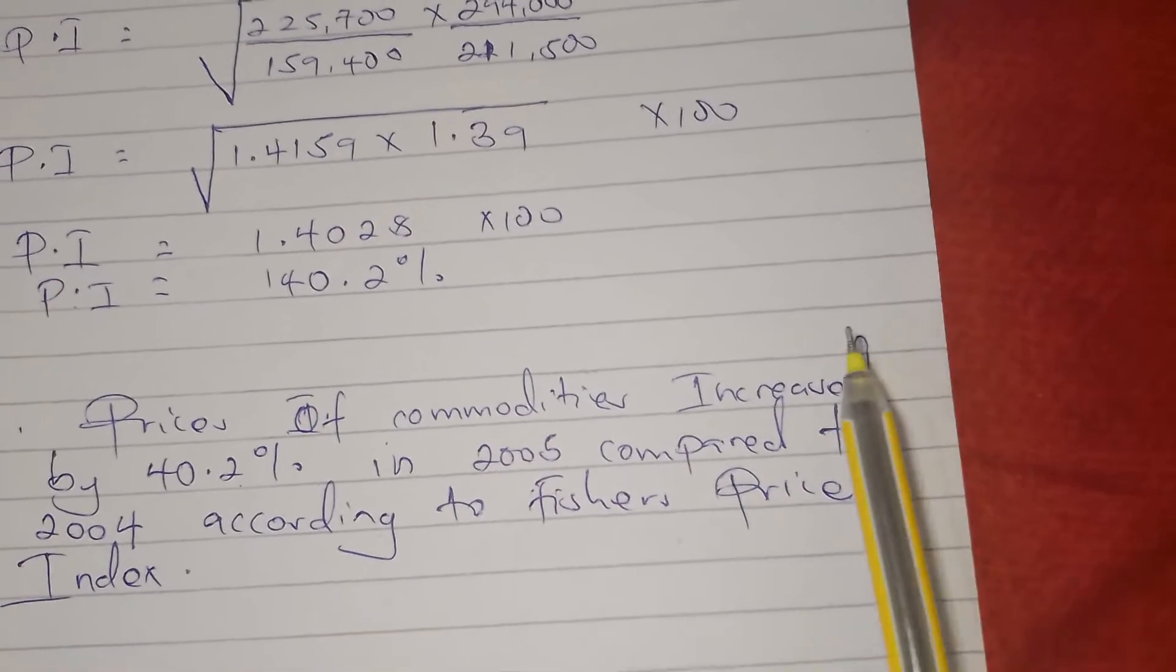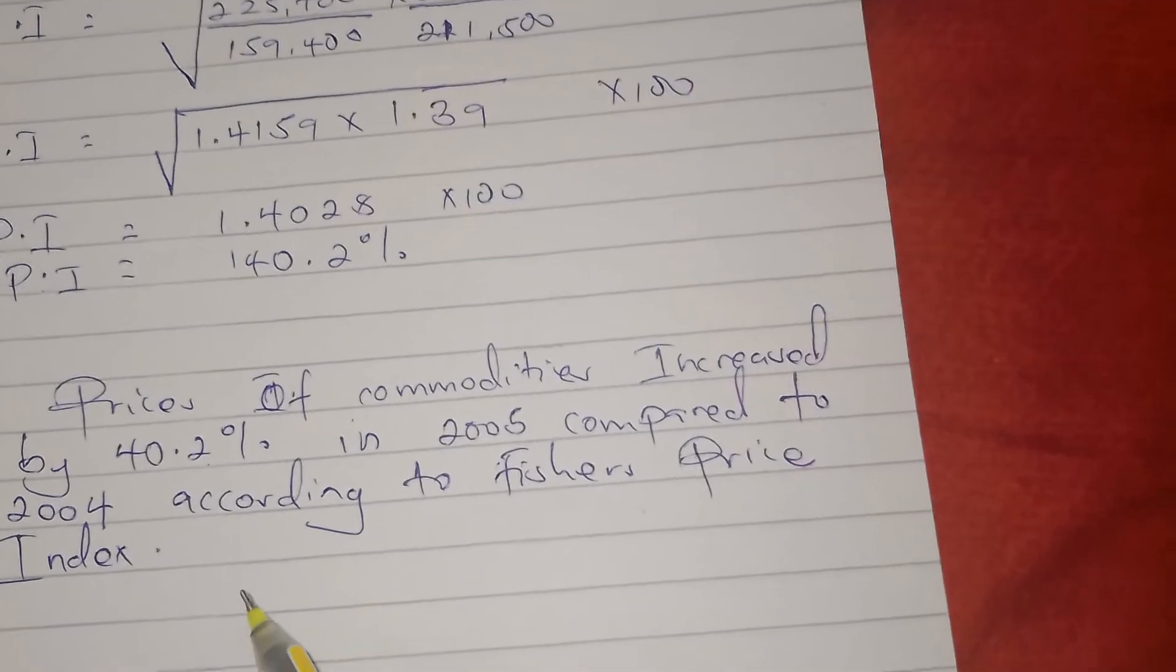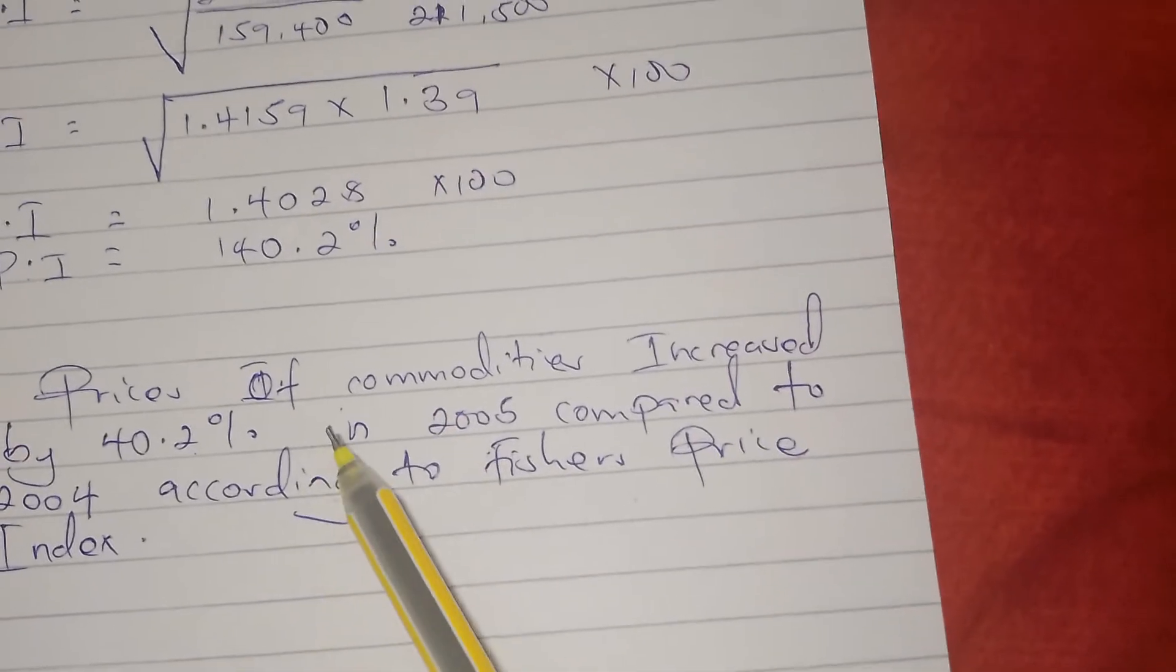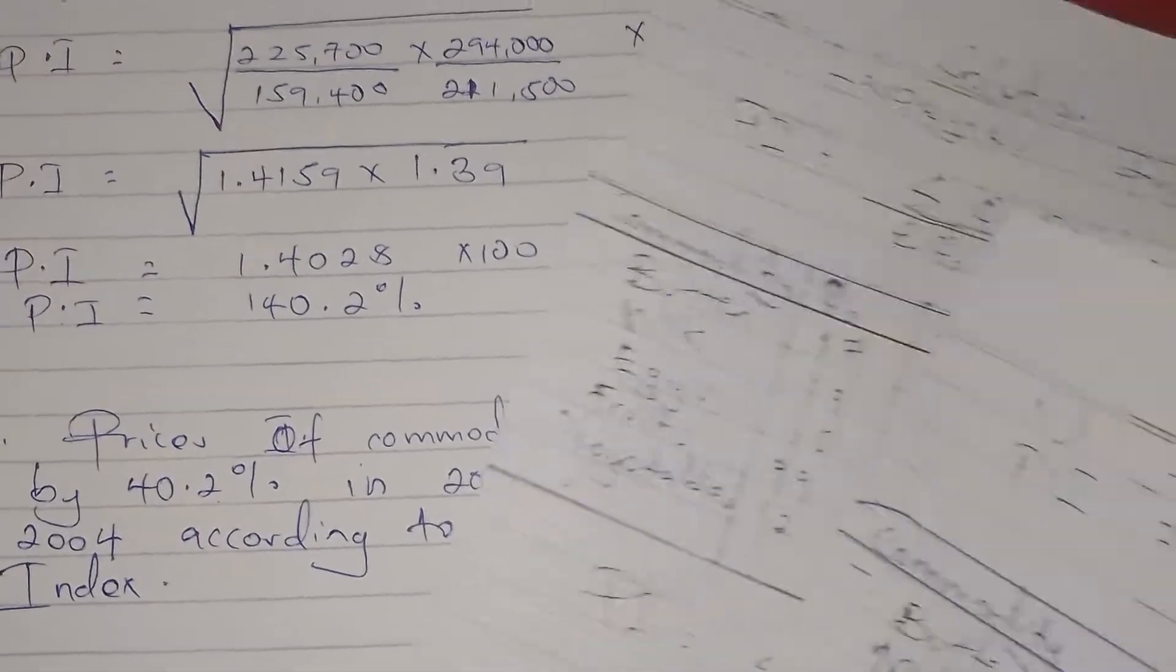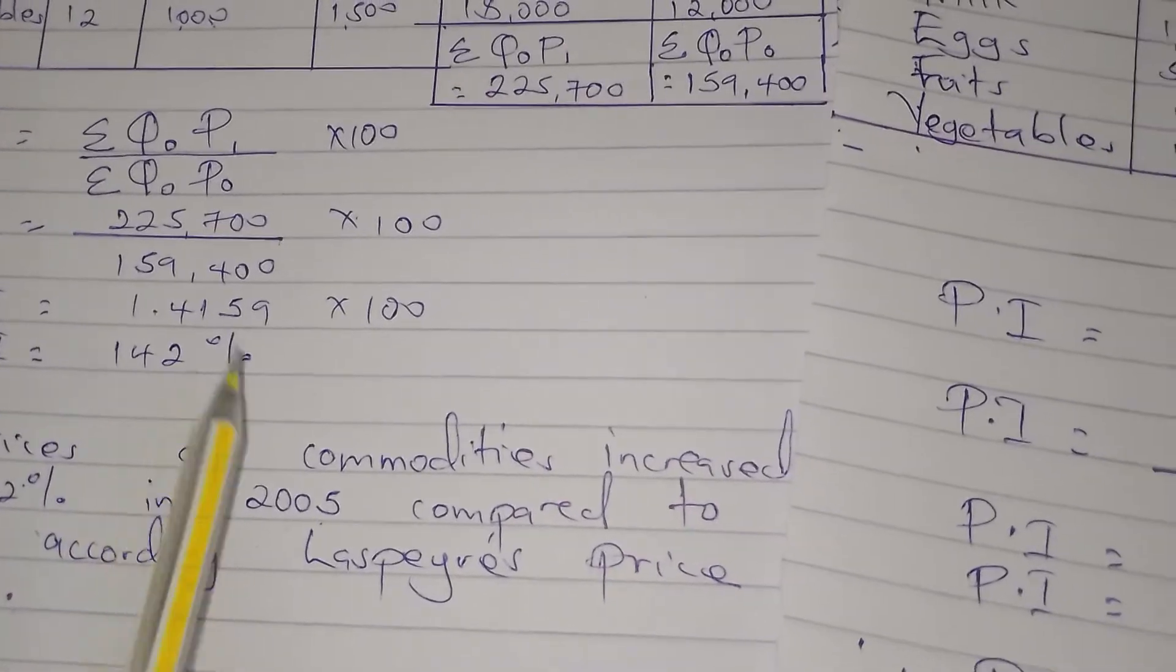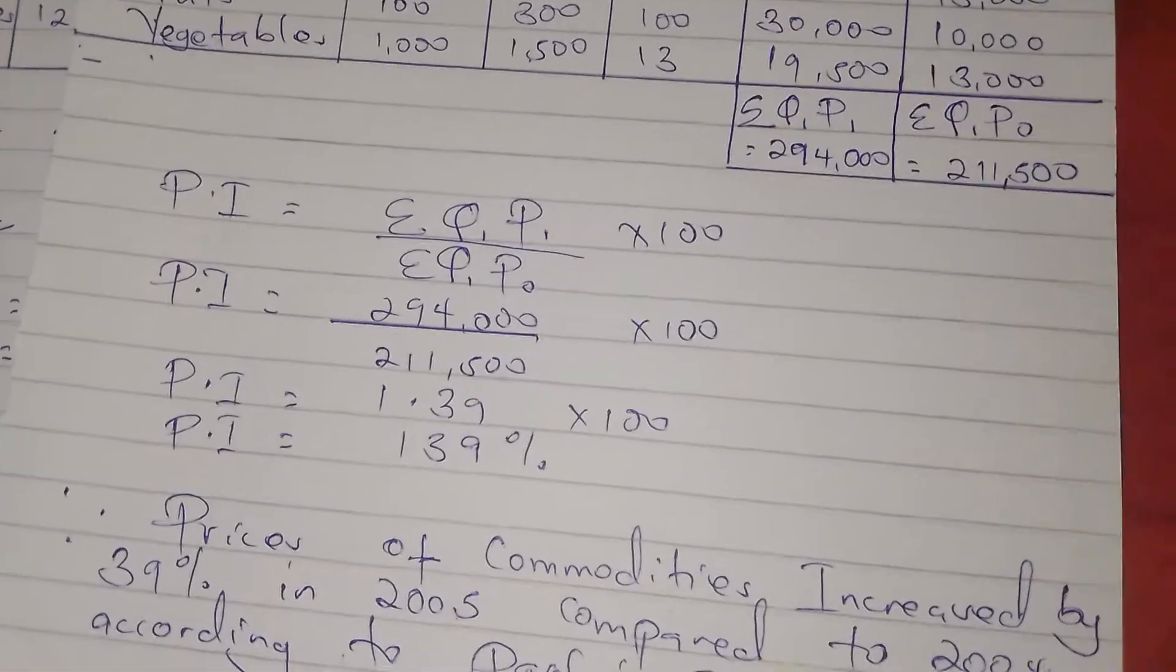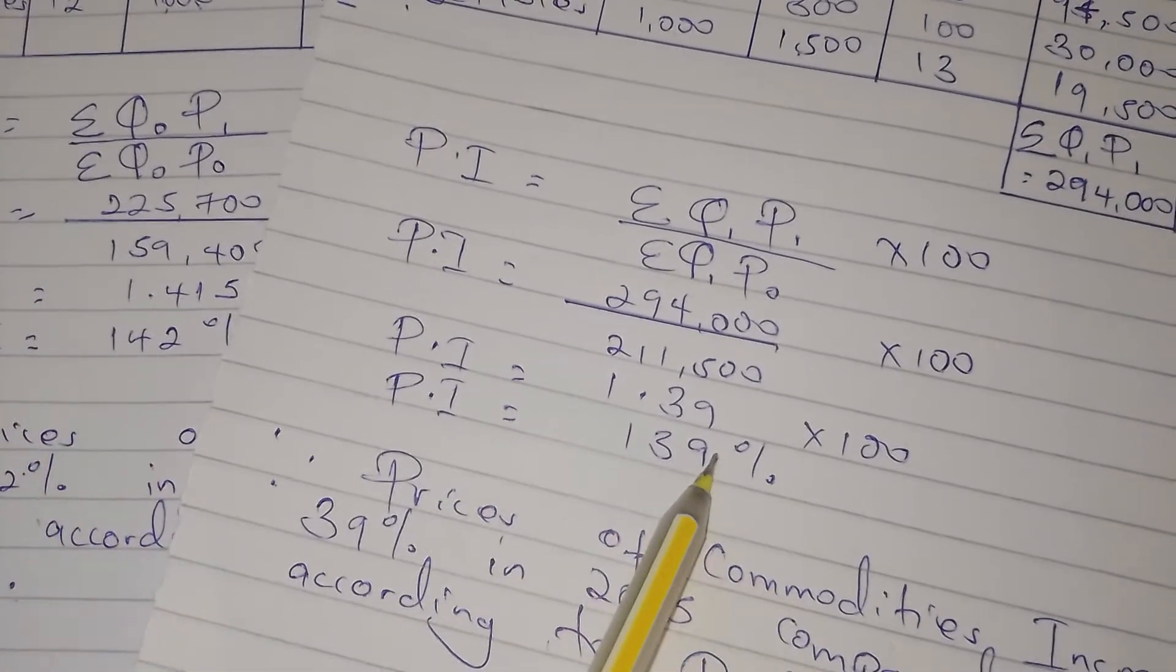Fisher's price index reconciles both Laspeyres price index and Paasche price index, and it gets the intermediate price index. Because if we look at the price index of Laspeyres, it is 142, and for Paasche it is 139. This one is higher and this one is lower.